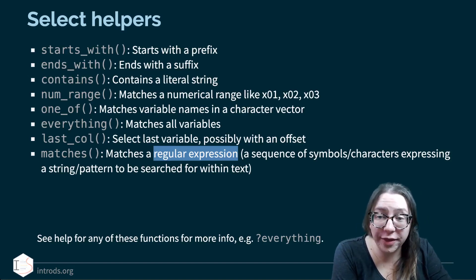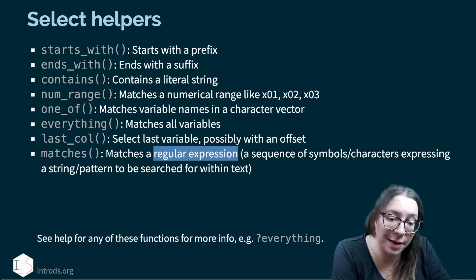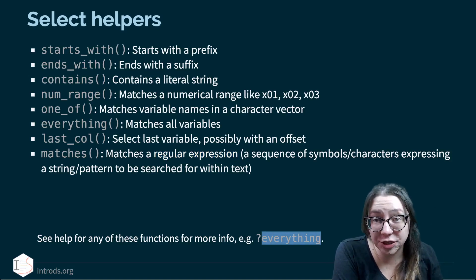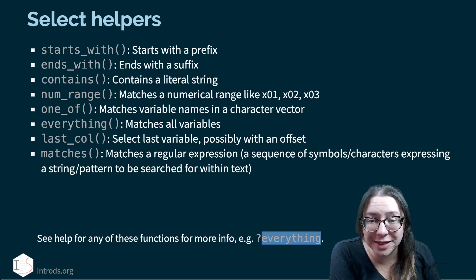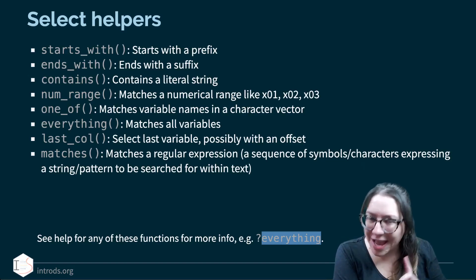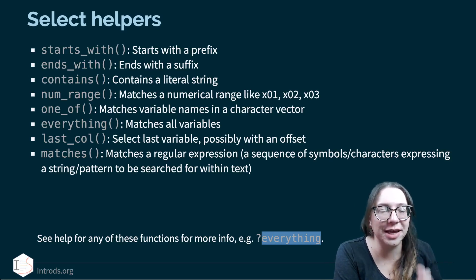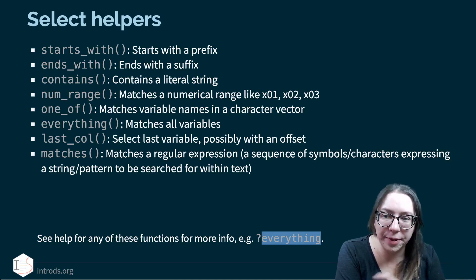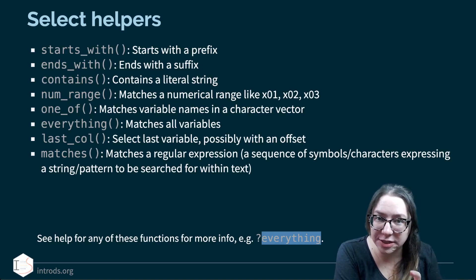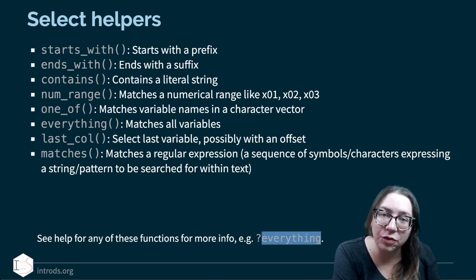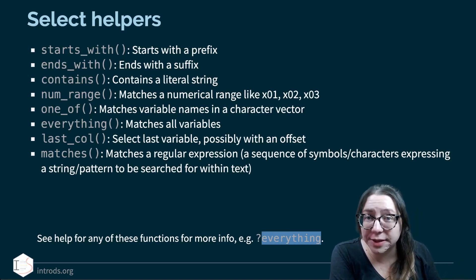You can look up help for any one of these select helpers. Pulling up help for any one of them gives you information on all of them in a single help file, which is really handy because sometimes it's hard to tell which one you need. As you're looking for something, just pull up the help and review the examples at the bottom to find the easiest approach.